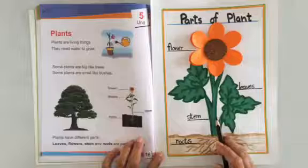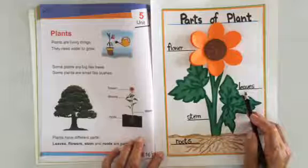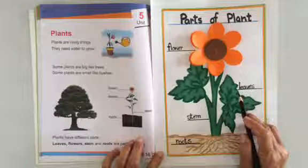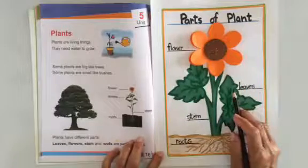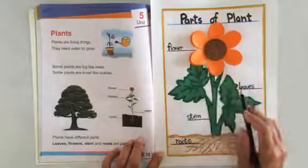The leaves make food for the plant and are called the kitchen of the plant.